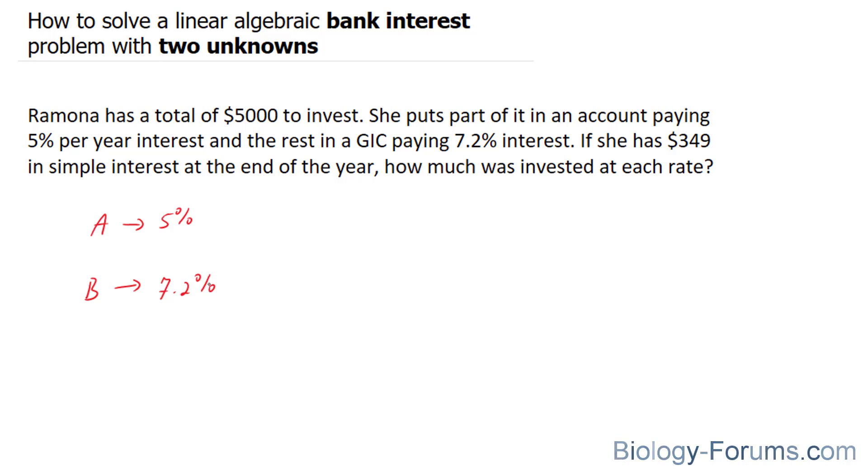And we know that she invested $5,000. So we know that A plus B is equal to $5,000. So that's one of the formulas we're going to use.